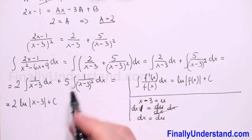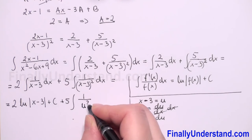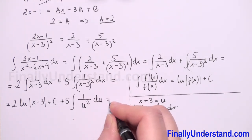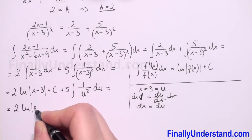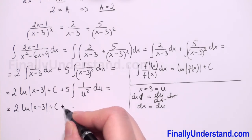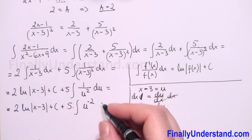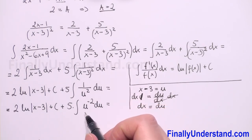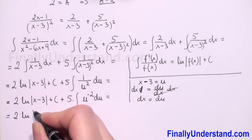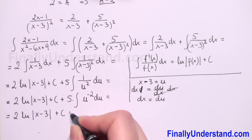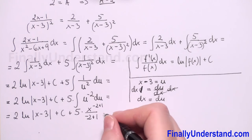Coming back to the second integral: 5 times the integral of 1 over (x minus 3) squared dx. Substituting u equals x minus 3 and dx equals du, we get 5 times the integral of u to the negative 2 power with respect to u. Applying the power rule: u to the power (negative 2 plus 1) over (negative 2 plus 1), which is u to the negative 1 over negative 1.